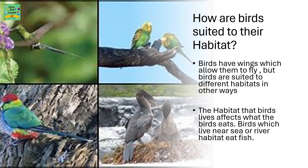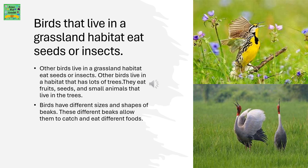How are birds suited to their habitat? Birds have wings which allow them to fly, but birds are suited to different habitats in other ways. The habitat that birds live in affects what they eat. Birds which live near sea or river habitats eat fish. Other birds live in a grassland habitat and eat seeds or insects. Other birds live in habitats with lots of trees and eat fruits, seeds, and small animals. Birds have different sizes and shapes of beaks, which allow them to catch and eat different foods.